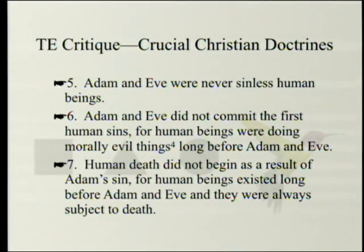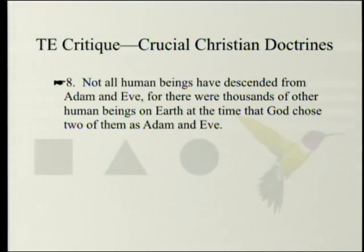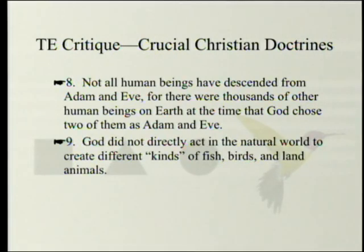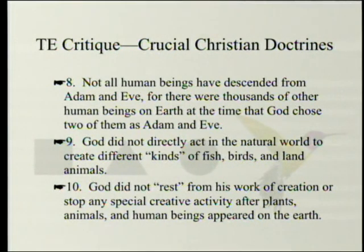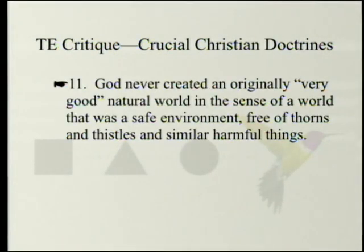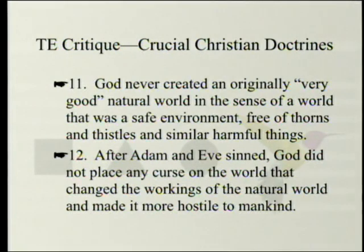Seven, human death did not begin as a result of Adam's sin, for human beings existed long before Adam and Eve and were always subject to death. Eight, not all human beings descended from Adam and Eve, for there were thousands of other human beings on earth at the time God chose two of them as Adam and Eve — assuming God chose them at all. Nine, God did not directly act in the natural world to create different kinds of fish, birds, and land animals. Ten, God did not rest from his work of creation or stop any special creative activity after plants, animals, and human beings appeared on the earth. Eleven, God never created an originally very good natural world — a safe environment free from thorns and similar harmful things. Twelve, after Adam and Eve sinned, God did not place any curse on the world that changed the workings of the natural world and made it more hostile to mankind. There never was a curse.